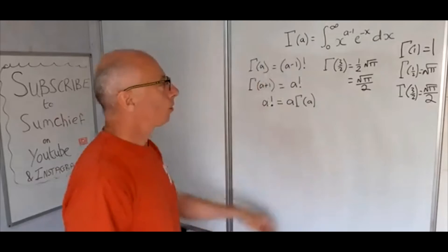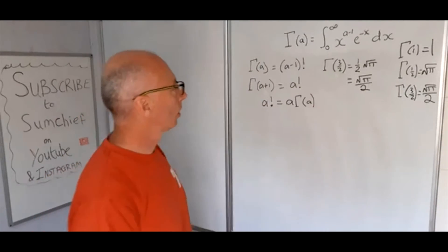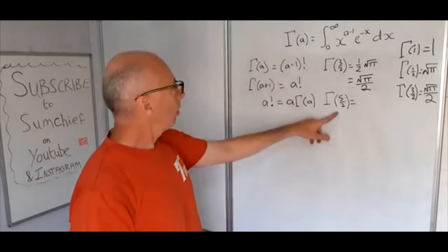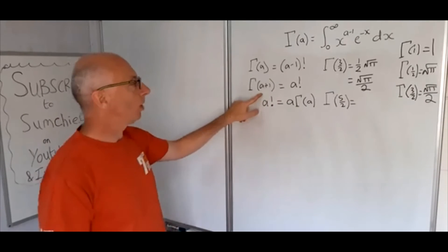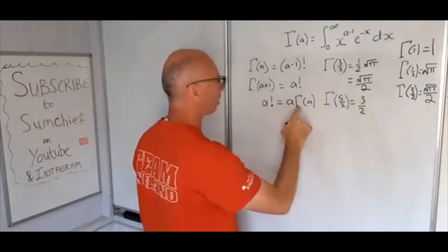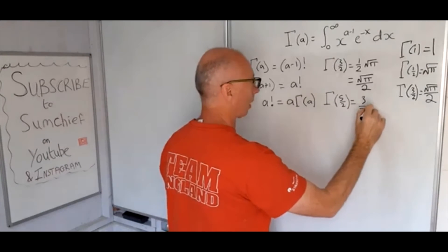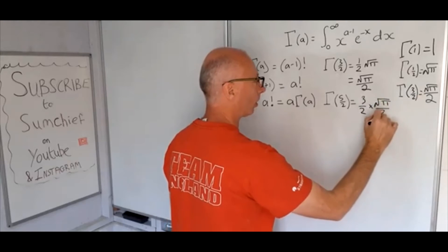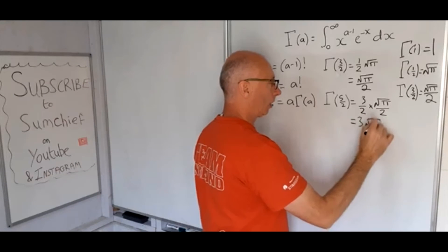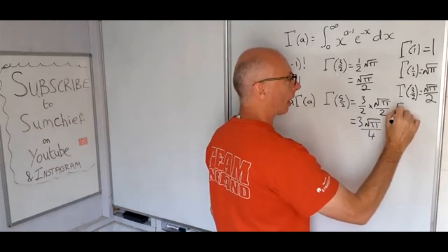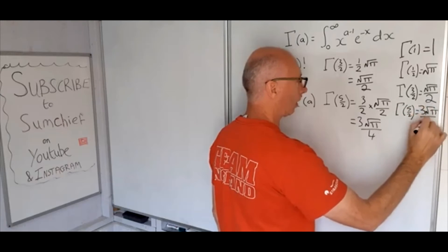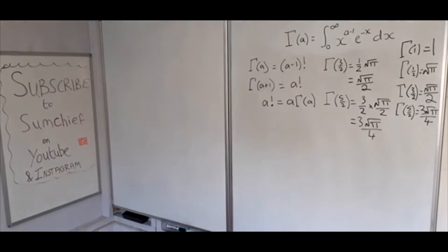Now let's compute gamma of 5 over 2. Writing 5 over 2 as 3 over 2 plus 1, our a is 3 over 2. Using the property: gamma of 5 over 2 equals 3 over 2 times gamma of 3 over 2, which is 3 over 2 times root pi over 2. Working that out gives 3 root pi over 4. Let's also try gamma of 7 over 2.